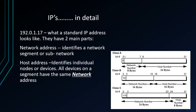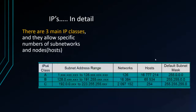Looking at IP addresses in terms of bits and bytes, some bytes are assigned to the network number and the remaining bytes identify the host. How that splits depends on the class of address. We have Class A, Class B, and Class C addresses. They're all similar in that a certain number of bits are reserved for identifying the network and the remaining bits identify the host.